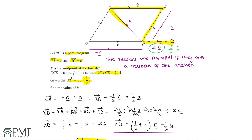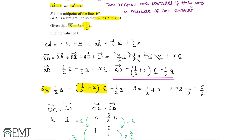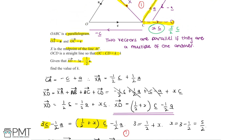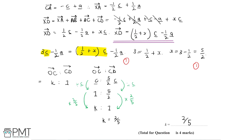This question is worth 4 marks. The first mark is for labelling X and D on the diagram. The second mark is for finding the vector XD and equating it to 3c minus half a equals half plus Xc minus half a. The third mark is for finding X equals 5 over 2. The fourth and final mark is for using this to find the ratio OC to CD and expressing it as K to 1, giving K equals 2 over 5.